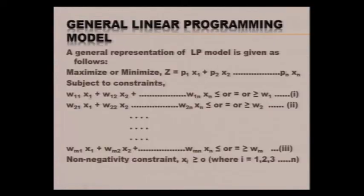We also have a non-negativity constraint, meaning all variables are restricted to be non-negative — that is, x1, x2, ..., xn ≥ 0. This is the general format of LPP in mathematical form. Any problem in this format is called a linear programming problem. If a real-world problem can be formulated in this format, then it is a linear programming problem.